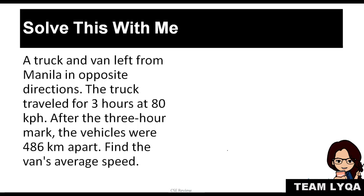Next, this is a little bit more complicated because there are two vehicles. A truck and van left from Manila in opposite directions. The truck traveled for 3 hours at 80 kilometers per hour. After the 3-hour mark, the vehicles were 486 kilometers apart. Find the van's average speed. So again, let's draw to have a point of reference. If this is Manila, the truck goes here, the van has to be going to the other side.